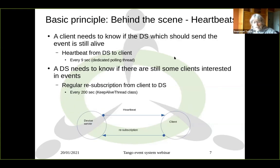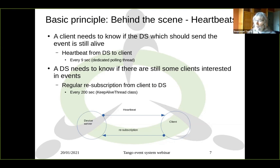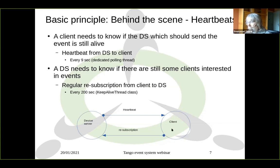To get the event system running, you also have to be sure that the two parts involved in the event transmission are both alive. From the client point of view, you have to be sure that the device server process responsible for sending the event is still alive. To do so, we have heartbeats — completely hidden from the user point of view, but they are there. We have two kinds of heartbeats: the first, most important one is from the device server to the client. It is a regular event sent every nine seconds from the device server process to the client.